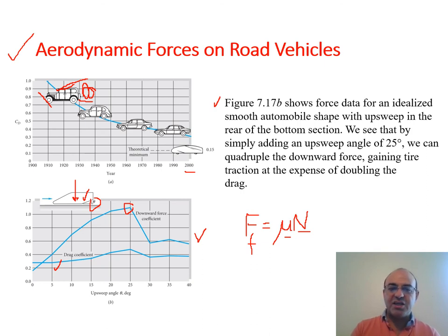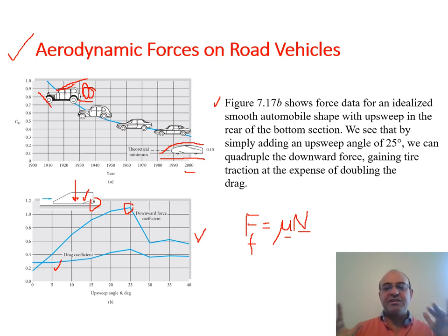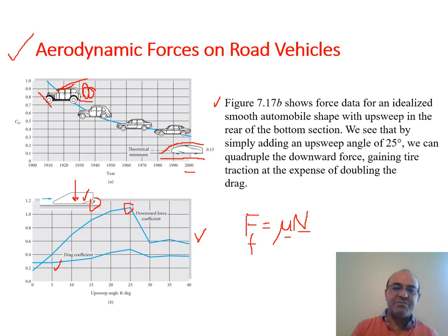Nowadays computer models can actually model the drag coefficient around any object, for instance a streamlined car. It used to be experimental in the past, but nowadays you can develop a geometry, run a CFD simulation using the Navier-Stokes equations, calculate the velocity field around the object, find the total friction drag and pressure drag, and find CD. There is really no need to perform experiments — current commercial packages can find CD for you.